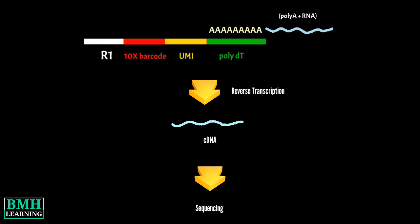Following downstream processing and sequencing, the transcriptomes of thousands of single nuclei can be analyzed and unique cell types identified.